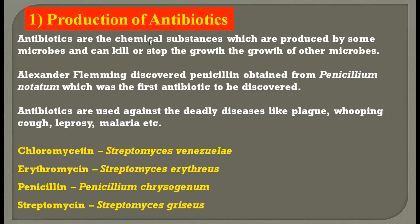First is production of antibiotics. Antibiotics are the chemical substances which are produced by some microbes and that can kill or stop the growth of other organisms. We often use antibiotics when we are ill. The very first antibiotic was discovered by Alexander Fleming and that first antibiotic was penicillin, which is obtained from Penicillium notatum. Today we use these antibiotics against deadly diseases such as plague, whooping cough, leprosy and malaria.